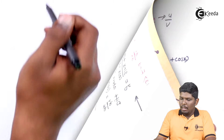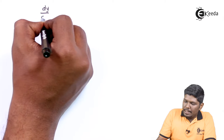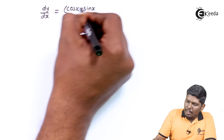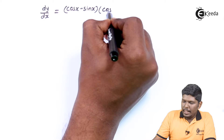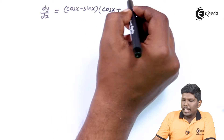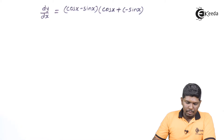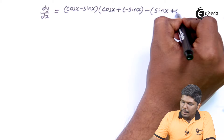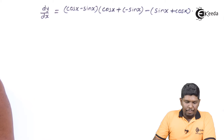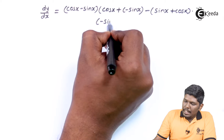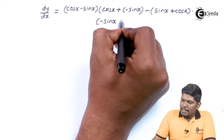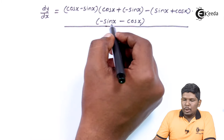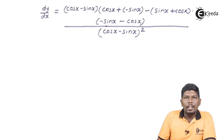Let us see the next step. dy by dx is equal to cos x minus sin x into the derivative of sin x plus cos x, plus the derivative of cos x minus sin x, minus sin x plus cos x into the derivative of cos x minus sin x, minus sin x plus cos x, upon v squared.